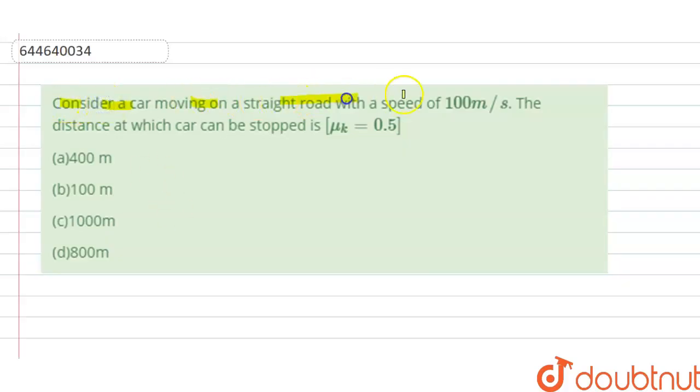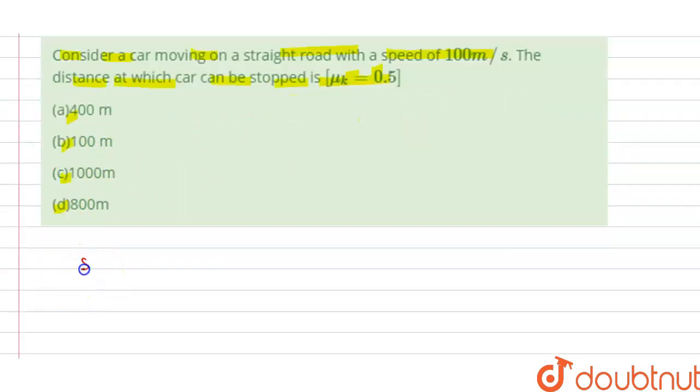Consider a car moving on a straight road with a speed of 100 meter per second. The distance at which the car can be stopped is what we need to find. We have coefficient of friction mu_k given to us as 0.5. Options a, b, c, d are given here, so we have to find which option is correct.